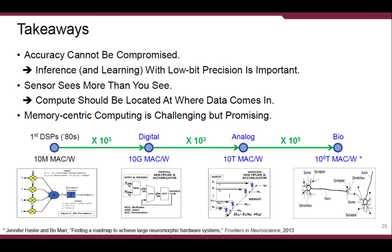Here are the takeaways. For the first part, I suggest not compromising accuracy even on resource-limited devices — developing excellent algorithms for low-bit precision networks is very important. For the second part, sensors offer more than you see, and compute should be co-located where data comes in. Finally, memory-centric computing is challenging but promising. We have already achieved three orders of magnitude in computational efficiency compared to DSPs from the early 1980s. In analog computing, we can achieve three more orders of magnitude, and if we succeed going from analog to binary, there are five more. That concludes my talk. Thank you very much.